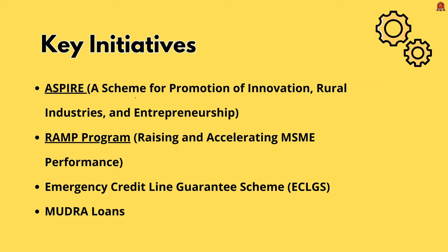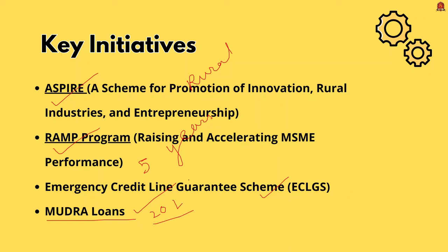The Aspire scheme — a Scheme for Promotion of Innovation, Rural Industries and Entrepreneurship — aims to set up incubation centers and technology centers to support innovation and entrepreneurship in rural and agro-based industries. The RAMP program (Raising and Accelerating MSME Performance) aims to promote MSME performance over five years, focusing on market access, formalization and improving competitiveness. Under the Mudra scheme, the government provides loans up to 20 lakh to small entrepreneurs, helping them expand their businesses without the need for collateral. These are important initiatives taken by the central government to promote the MSME sector.